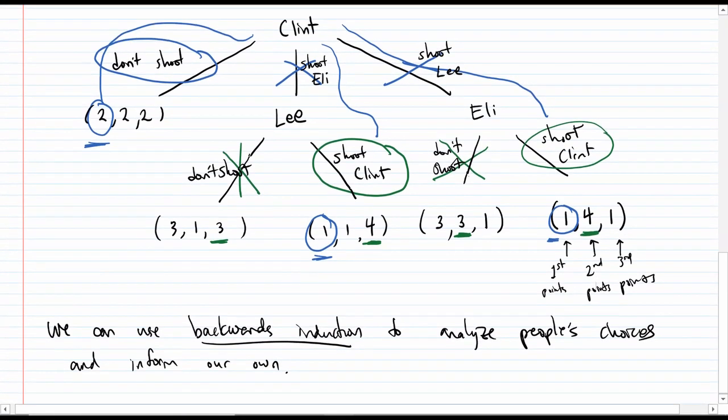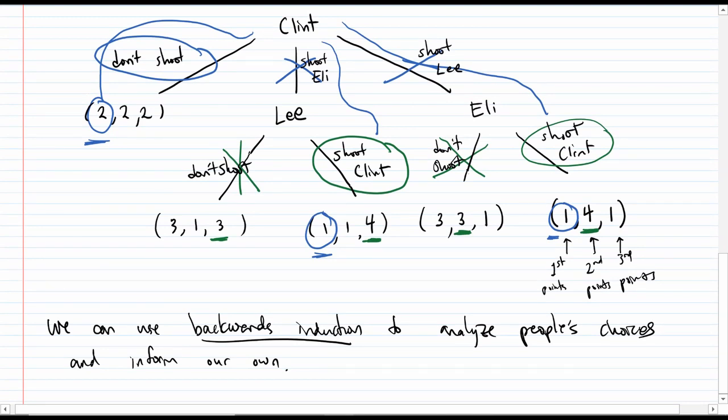And if Clint chooses to shoot Lee, he'll get shot by Eli and again end up with a score of one. So now, which of these scores would he prefer? Two, one, or one? Well, he'd prefer that two. At least he stays alive. So he would not shoot Eli, he would not shoot Lee, and he would choose himself not to shoot. And this, in turn, would make everyone not shoot. So why was this called backwards induction? Well, we looked from the bottom of the tree, from the last scenario, to see what would the character making the decision choose in each of these scenarios. And by thinking about what would happen in the future, Clint could think about what he should do now.